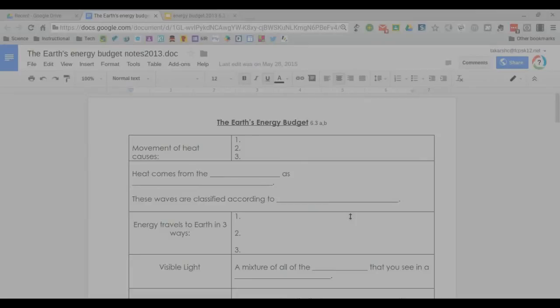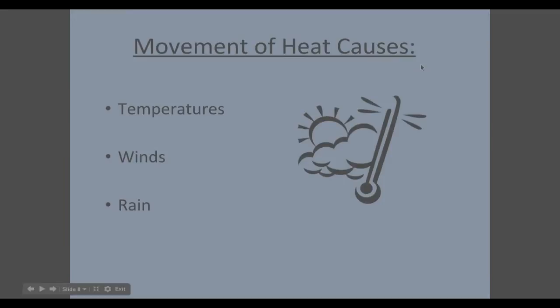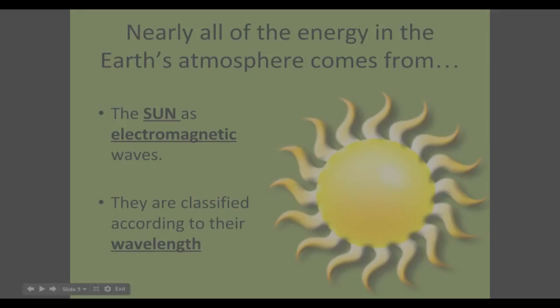Okay, now we're going to switch gears to a new note sheet called the Earth's Energy Budget. So please pull this out. Heat is a major factor of weather. The movement of heat causes our temperatures to change. It's responsible for our winds and rain. Nearly all of the energy in the Earth's atmosphere comes from the sun as electromagnetic waves. We classify these waves according to their wavelength.